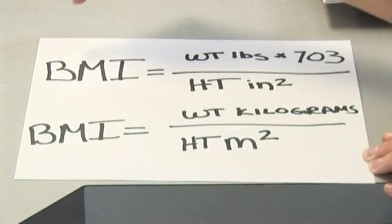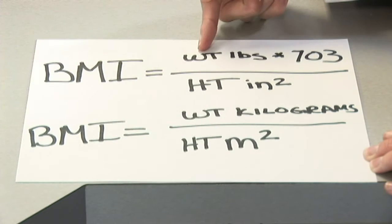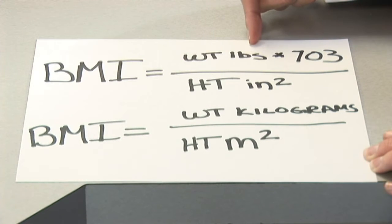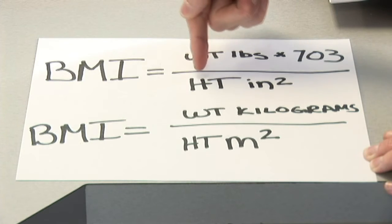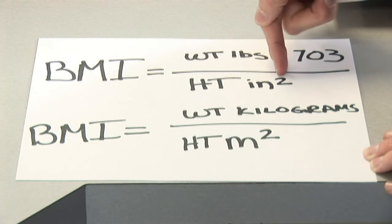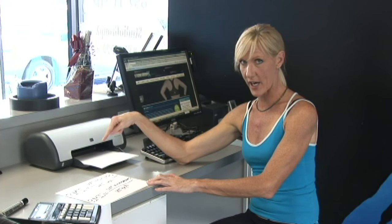Let me show you quickly — it's a really easy formula and you can perform this with your own numbers. BMI, here is the formula: body mass index is equal to your weight in pounds, multiplied by 703, and then you divide it by your height in inches squared.